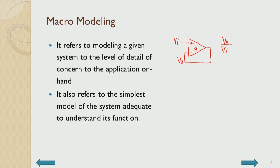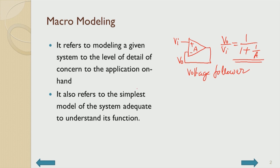So V_naught by VI is 1 by 1 plus 1 over loop gain. That 1 over loop gain says it should be 1 over A. This basic principle of the voltage follower is fundamental to most of our feedback systems. The output is fully fed back to the input, then output follows the input - that is the basic principle.